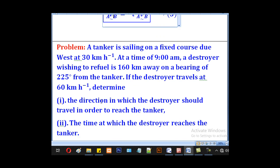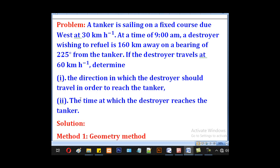So let's go to this problem. A tanker is sailing on a fixed course due west, note that word due west, at 30 km per hour. At a time of 9 AM, a destroyer wishing to refuel is 160 km away on a bearing of 225 from the tanker. If the destroyer travels at 60 km per hour, determine: (i) the direction in which the destroyer should travel in order to reach the tanker, and (ii) the time at which the destroyer reaches the tanker.